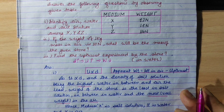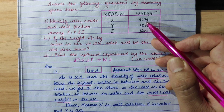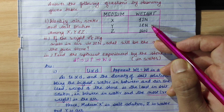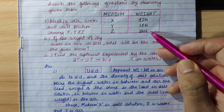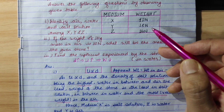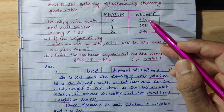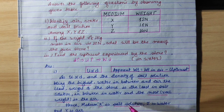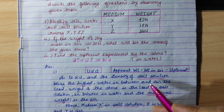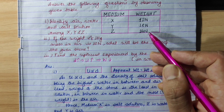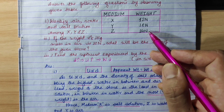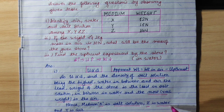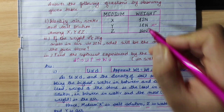So, looking at the table: the object's weight in medium X is 12 newton, which is the least. Medium Y shows 18 newton, which is the highest. Medium Z shows weight in between at 14 newton. So we can identify which medium is which from these values.